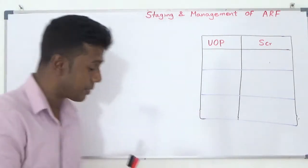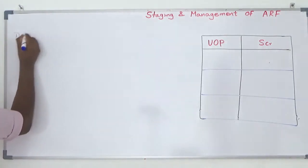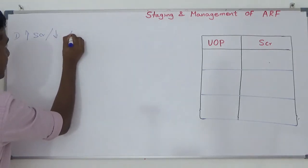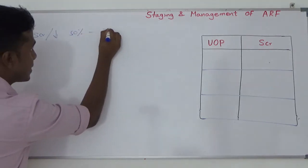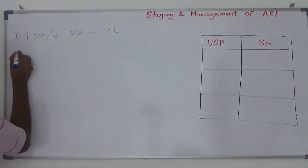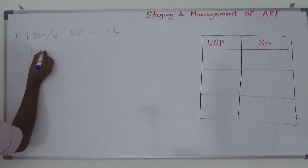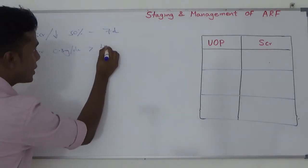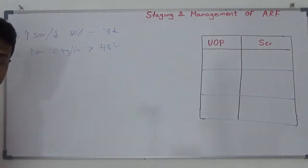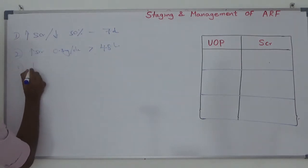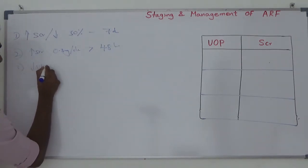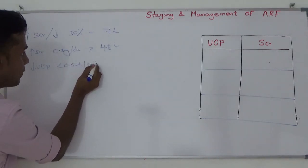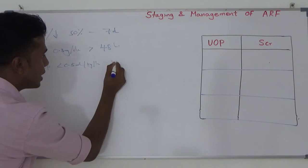So you know how to diagnose — there are 3 methods. Number 1: rising of serum creatinine or drop in renal function 50% within 7 days. Number 2: rising of serum creatinine 0.3 mg per deciliter within 48 hours. Number 3: dropping urine output less than 0.5 ml per kg per hour for 12 hours.